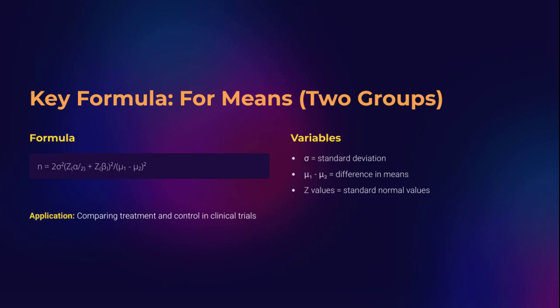If you're comparing the means of two groups — say treatment versus placebo — this formula is your go-to. It's based on detecting a difference between two population means using the standard deviation and the critical values from the normal distribution for alpha and beta. Sample size equals two times the variance, multiplied by the square of the sum of Z values for alpha and beta, divided by the square of the difference in means. Greater variance or smaller expected differences means you need more participants. This is crucial in clinical trials — planning a trial without this formula is like driving blindfolded: risky and expensive.